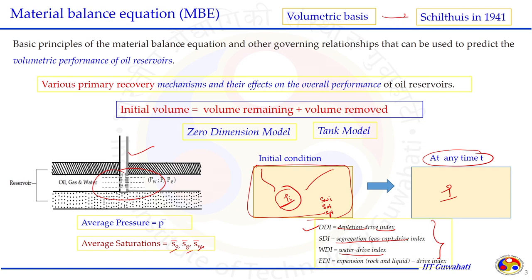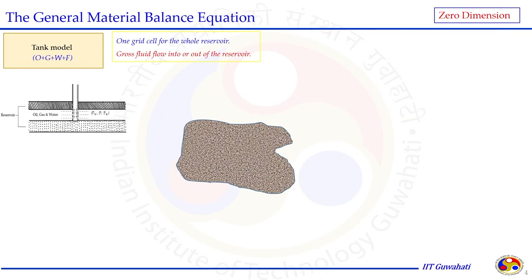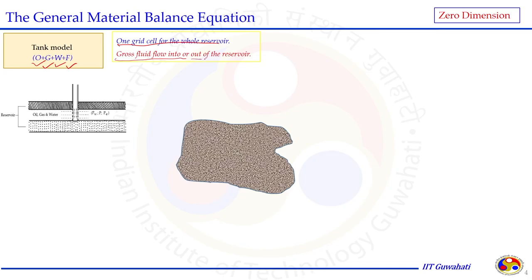The tank model contains oil, gas, water, and the rock formation. This is considered as one grid cell in computational terms — one large grid where everything happens and the performance is evaluated. Gross fluid flow into or out of the reservoir domain is considered without separating by direction, which is why it is a zero-dimension model.